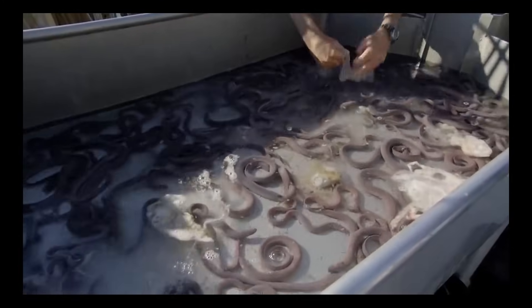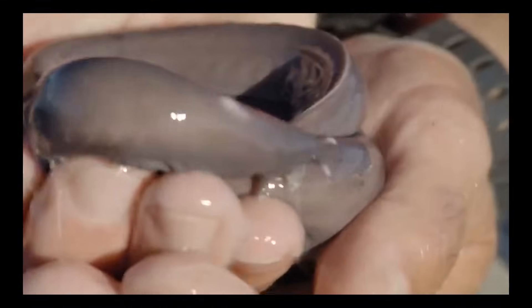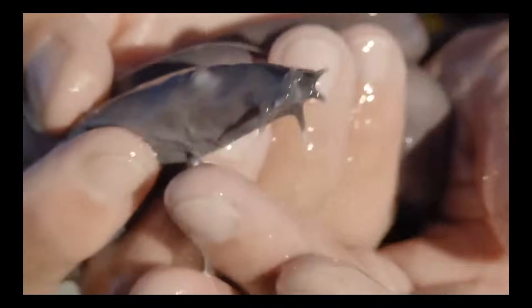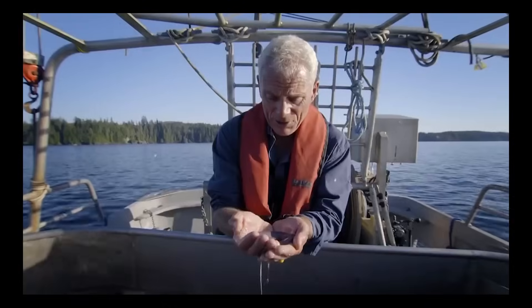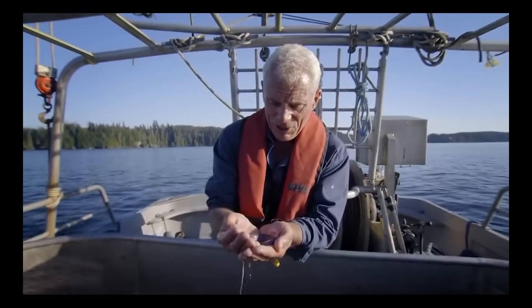Hagfish look like giant worms, but in evolutionary terms, they're more like the most primitive vertebrates on the planet. What I've got in my hand here, this hagfish, is actually what could be called a living fossil, because in terms of body plan, this creature has remained pretty well unchanged for something like 300 to 500 million years.